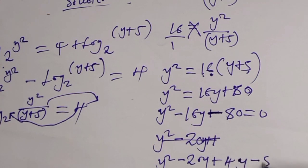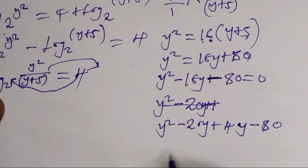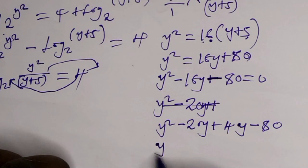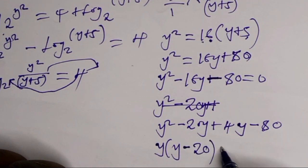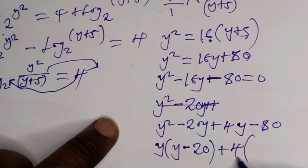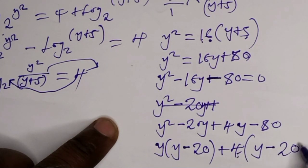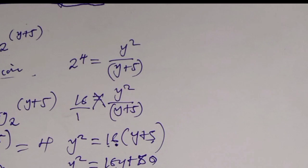Because when you multiply 20 times 4 we get negative 80, and when we subtract, negative 20 plus 4 gives us negative 16. Now let's factor out what's common. Here what's common is y, giving y open bracket y minus 20, plus 4, since 4 into 4y leaves y, minus 4 into 20 which is 80. So we get y plus 4.